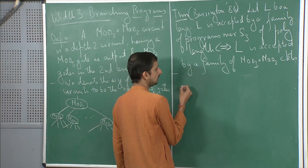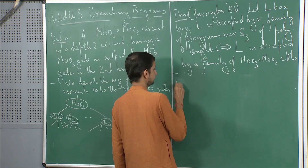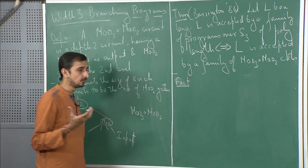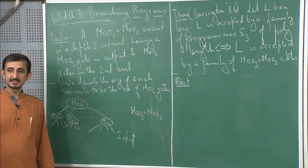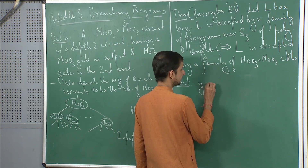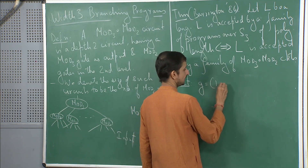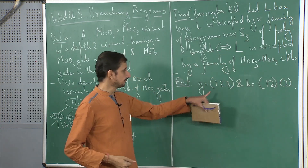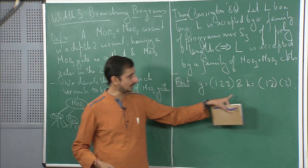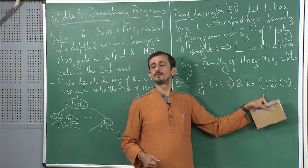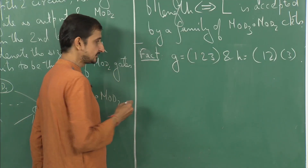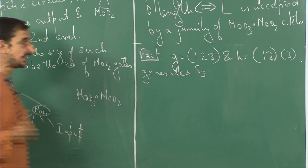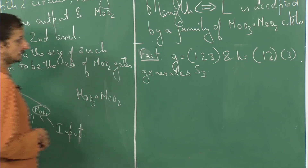We have a couple of lemmas before we get to the theorem. First, a simple fact about S3. S3 is the symmetric group of order 3 consisting of 6 elements. Consider g = (1→2, 2→3, 3→1) — the cyclic permutation of order 3 — and h = (1→2, 2→1, 3→3) — the transposition. g and h generate S3; in other words, any element in S3 can be written as a product of g and h.